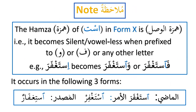From Forms 7 to 10, all derived verbs have Hamzatul Wasl. The Hamza of this bab — called Hamza, sin, and ta — in Form 10 is Hamzatul Wasl. It becomes silent when prefixed with waw, fa, or any other letter. So istaghfara connected with waw becomes wastaghfara, or fastaghfara.